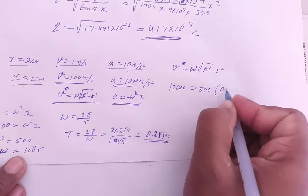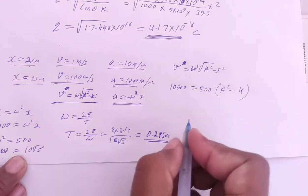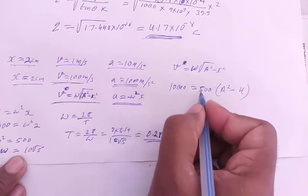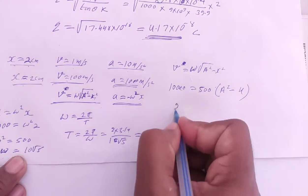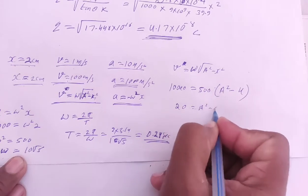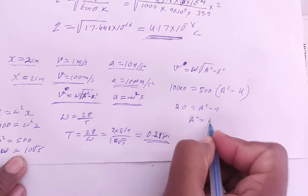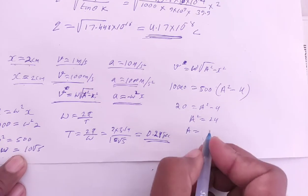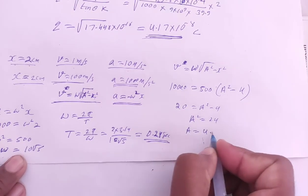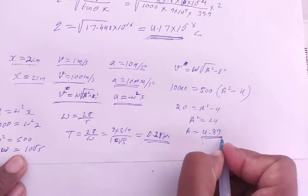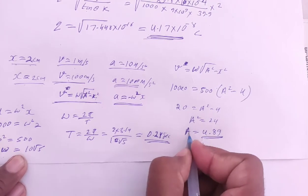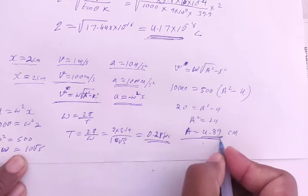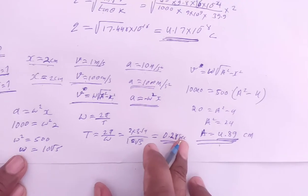x is 2, so we get 20 equals A² minus 4, which gives A² = 24. So A = √24, which is slightly less than 5, about 4.89 cm. The amplitude is 4.89 centimeters.